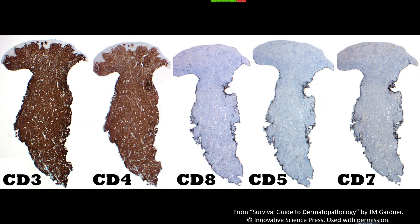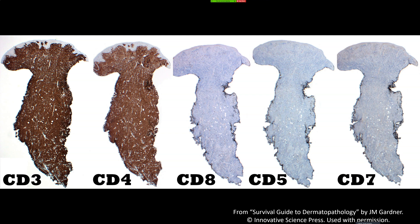Now look at this immunostain panel — it looks easy, right? CD3 is positive, so it's T-cells, and you can see some Pautrier micro-abscesses. They're nearly 100% CD4 positive. There are only a couple of CD8-positive cells, which are probably just the background non-neoplastic T-cells. Those same CD8-positive cells are positive on CD5 and CD7, so those few are normal. Everything else shows complete CD4 dominance — way outside the normal four-to-one ratio. CD5, normally positive in T-cells, is completely lost. CD7, also normally positive, is totally wiped out.